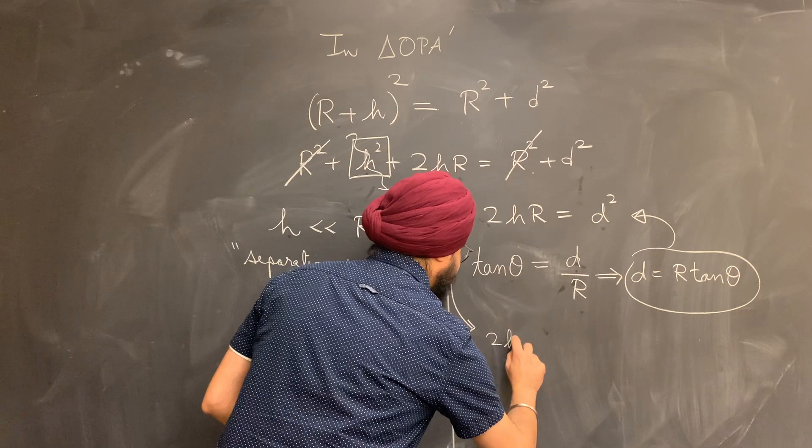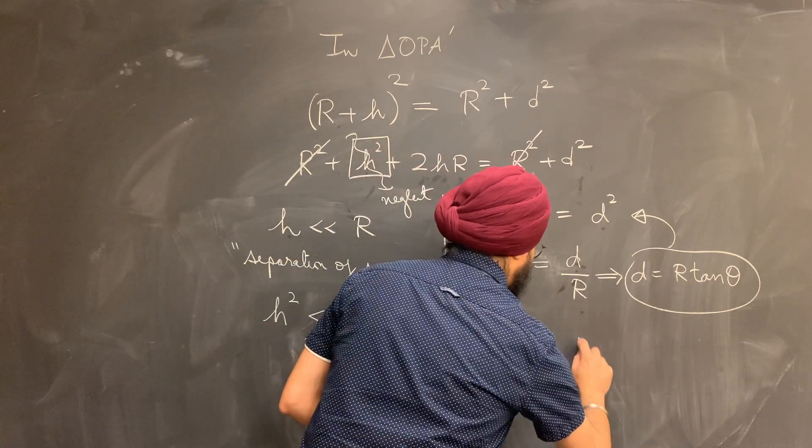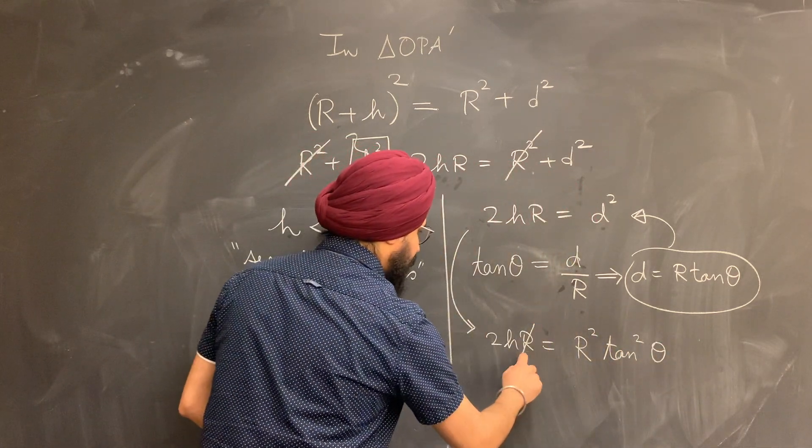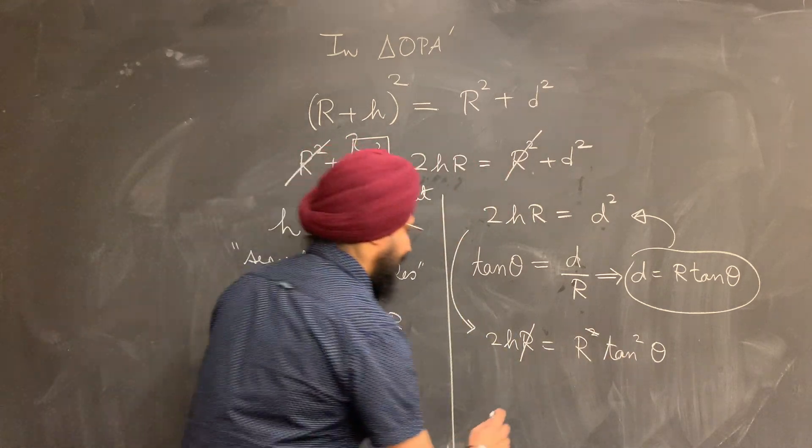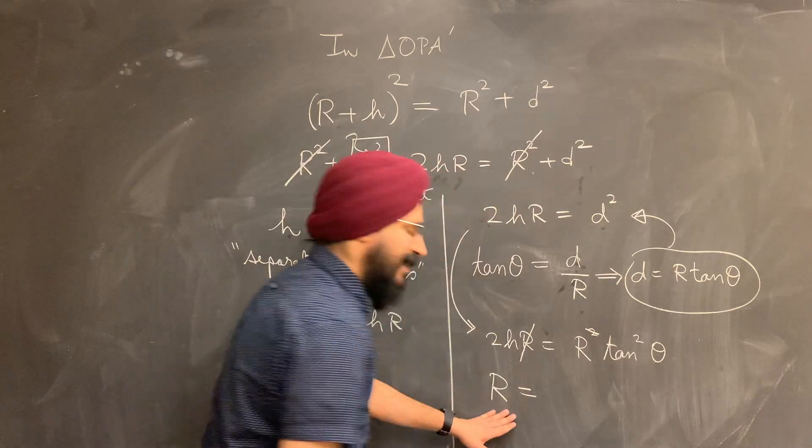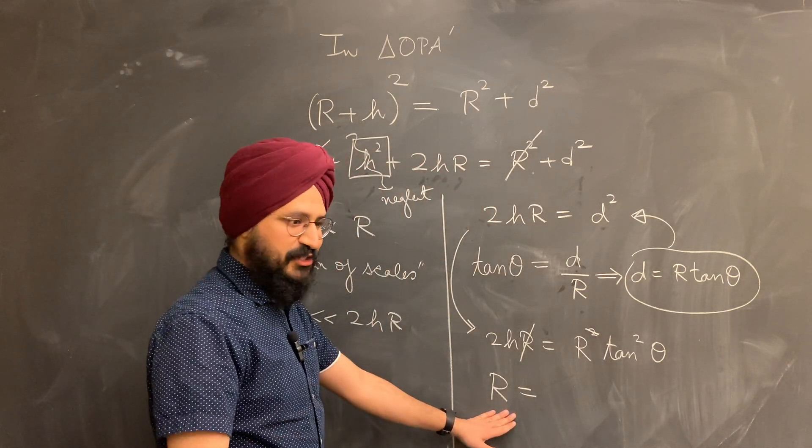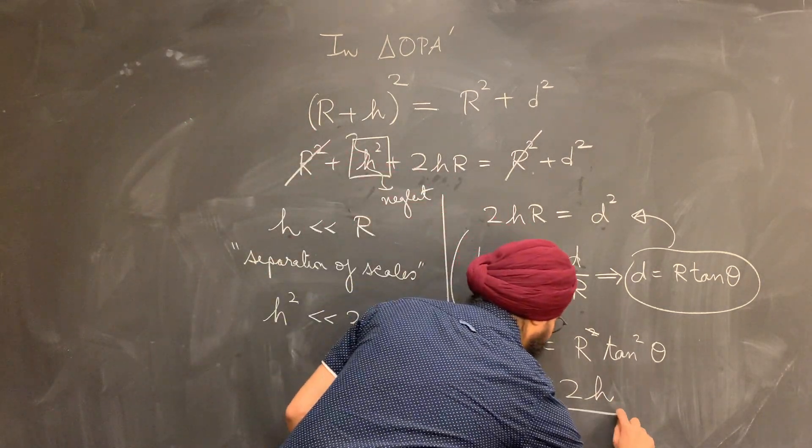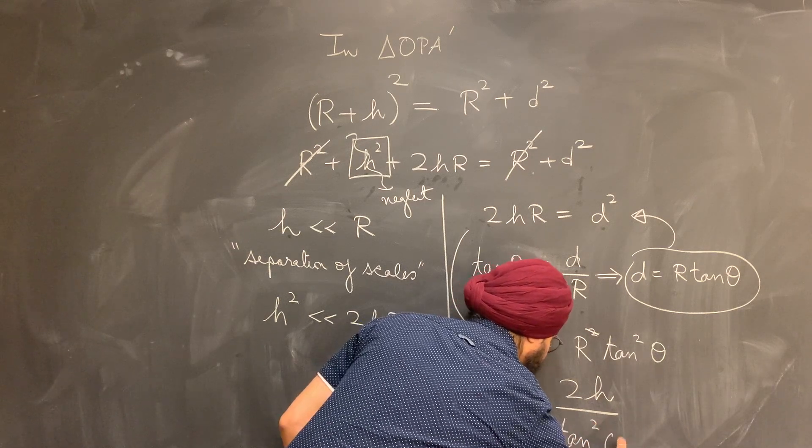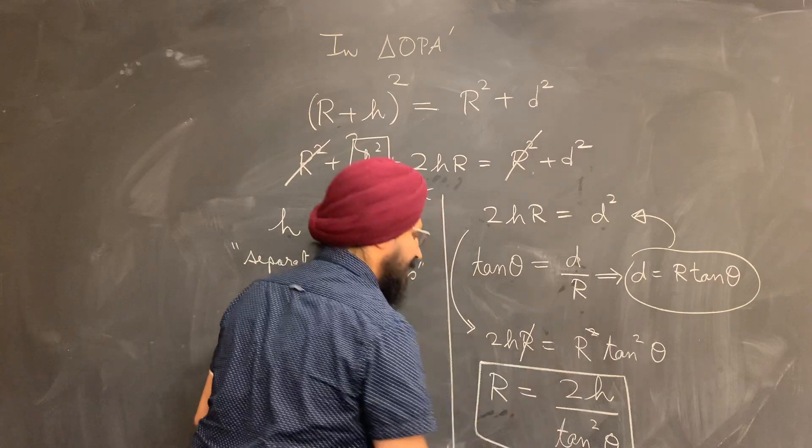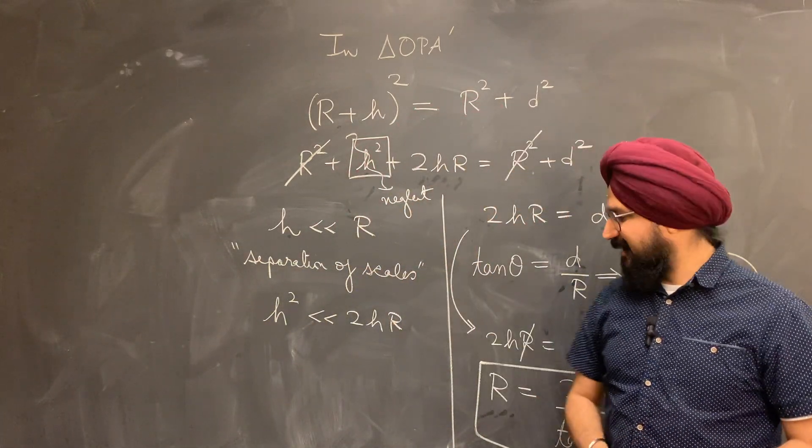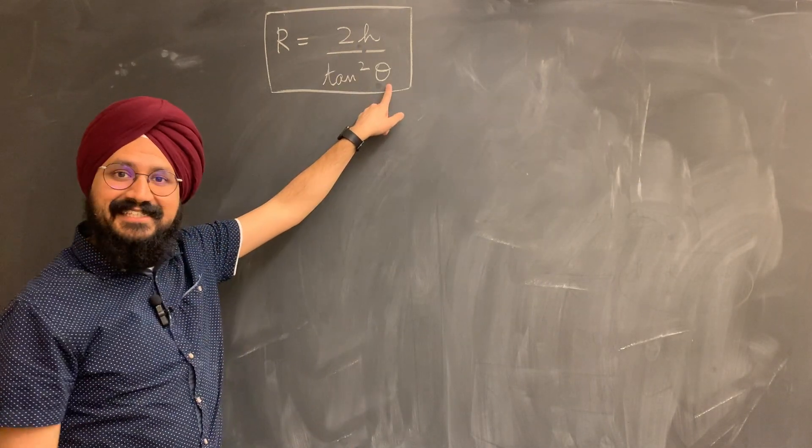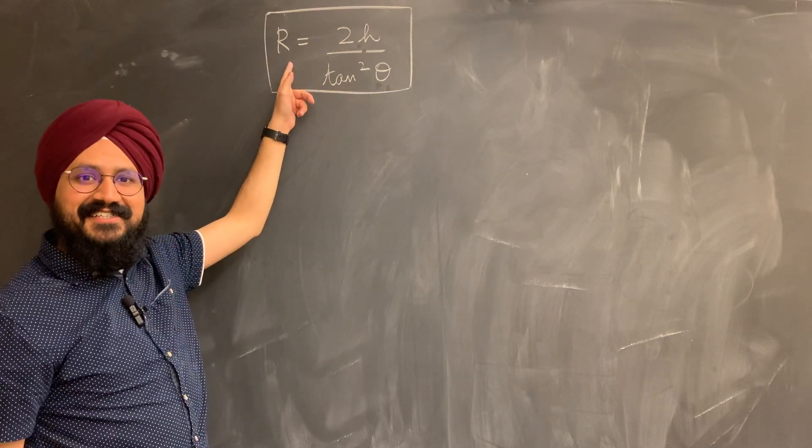And once I do it, what I get is, I'm going to come down here, so 2HR is R square tan square theta. As you would notice, one power of R cancels away. And la-di-da, my radius of the Earth can now be isolated in terms of other measurable quantities. So R is twice the height that I gain once I stand up divided by the square of the tangent of the angle that the sun sweeps in that time between the first and the second sunsets. All that is left to do now is approximate H and the angle theta, and we are good to go. We can basically get the radius of the Earth.